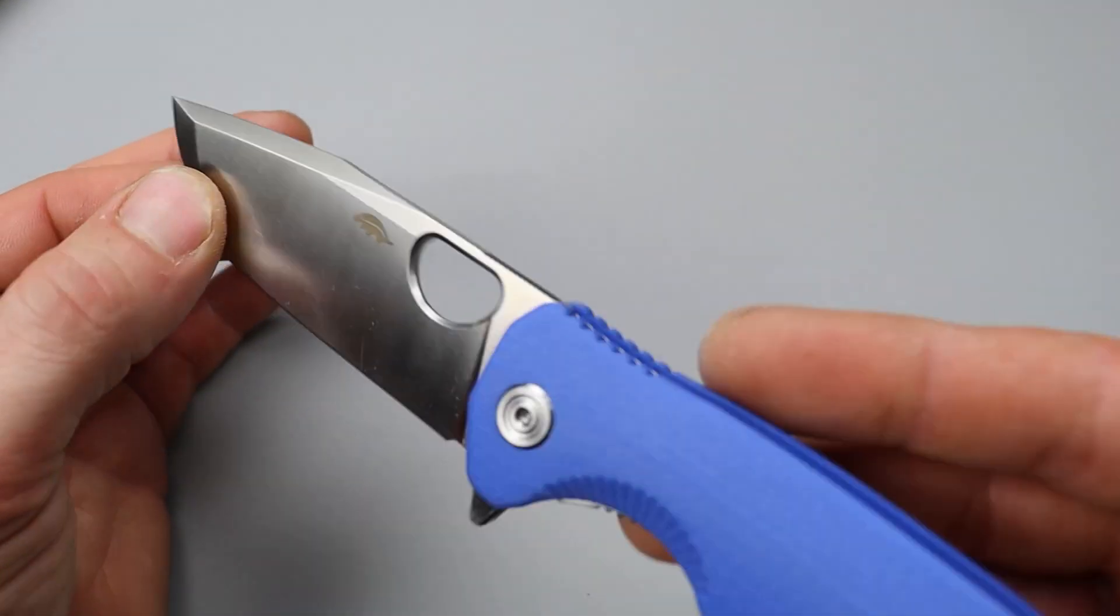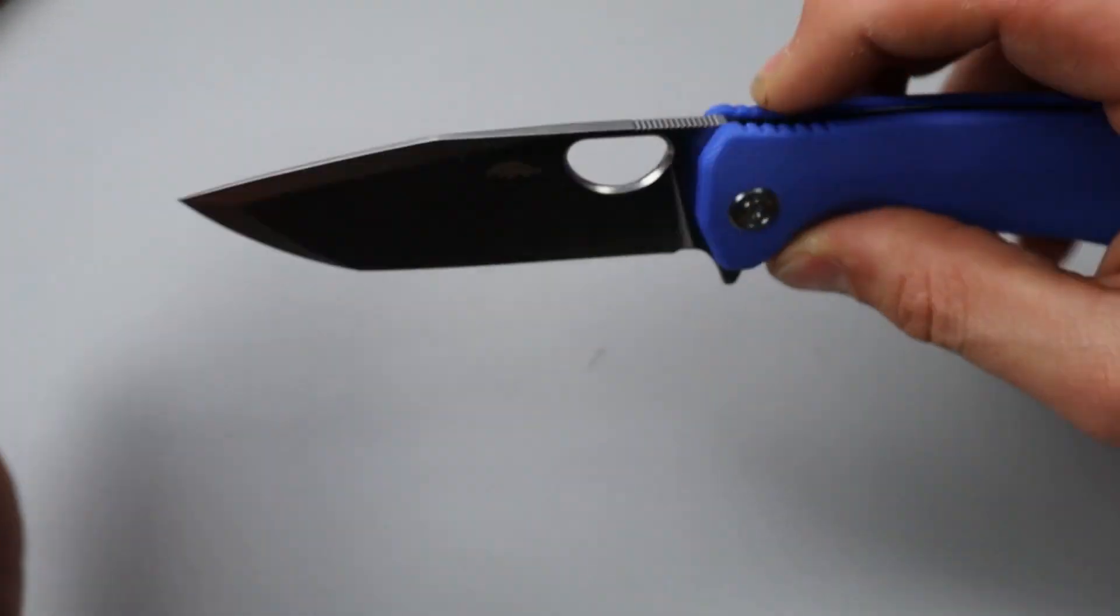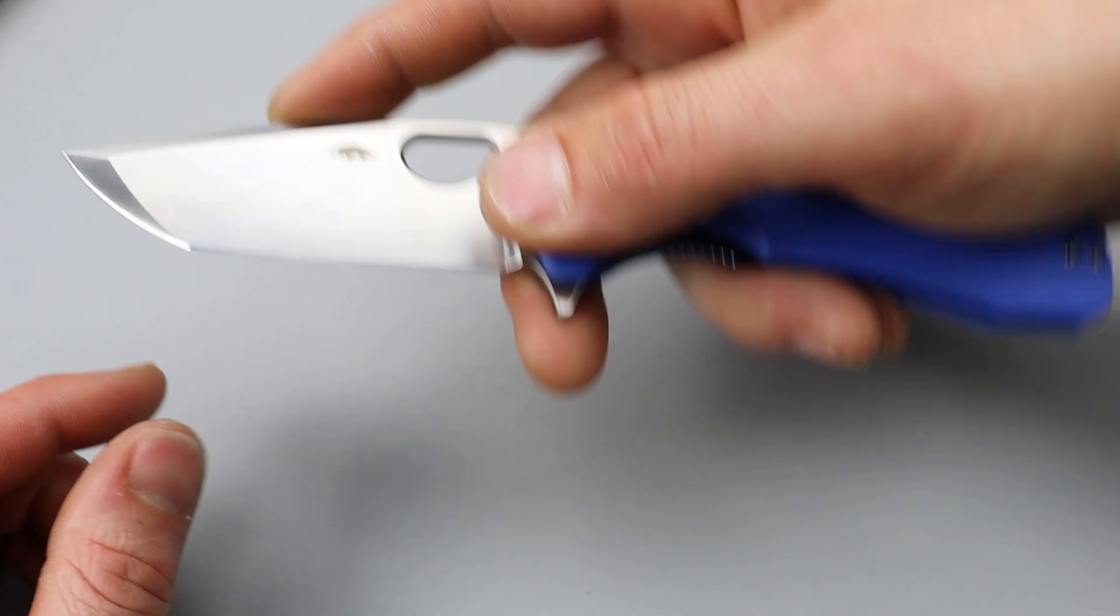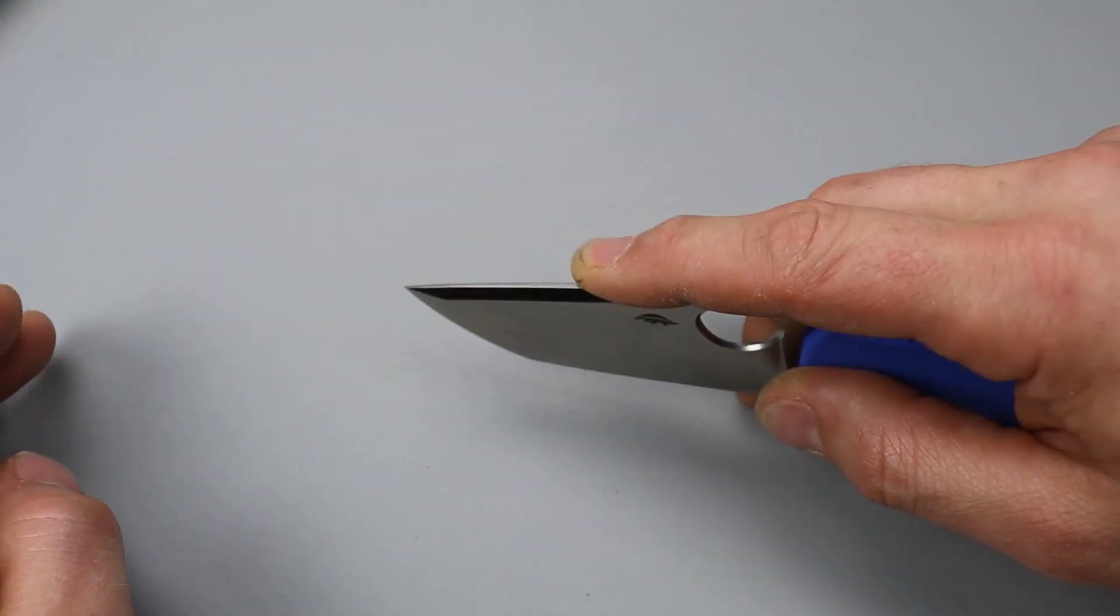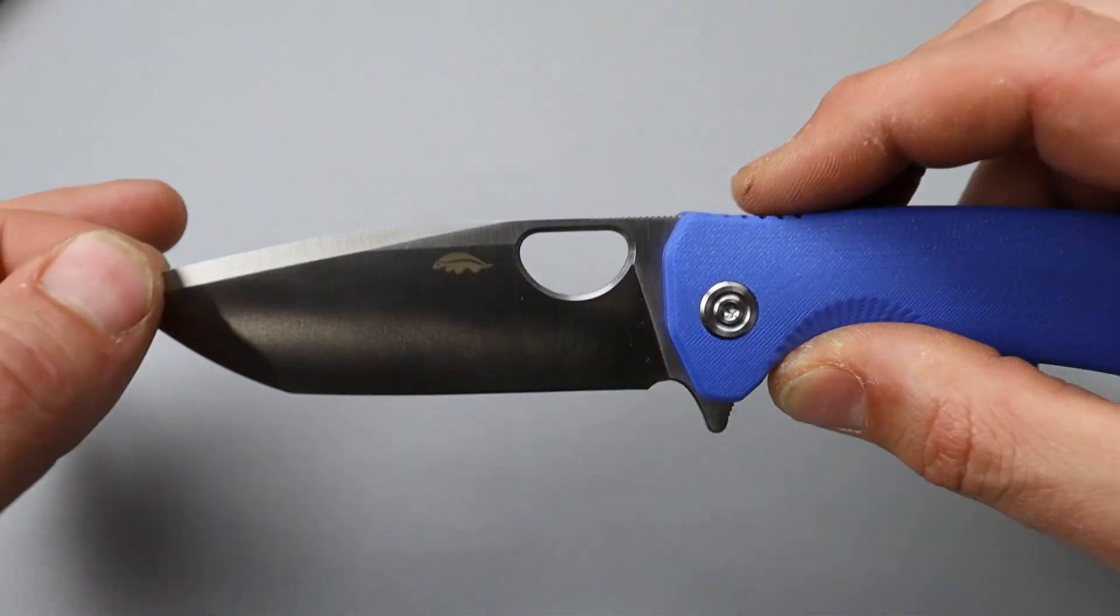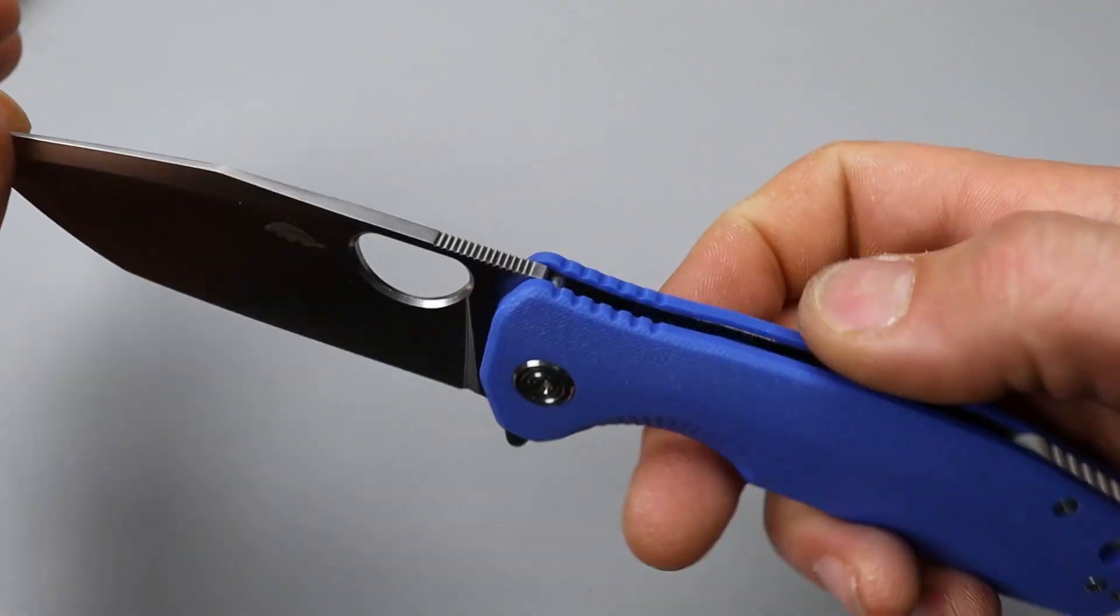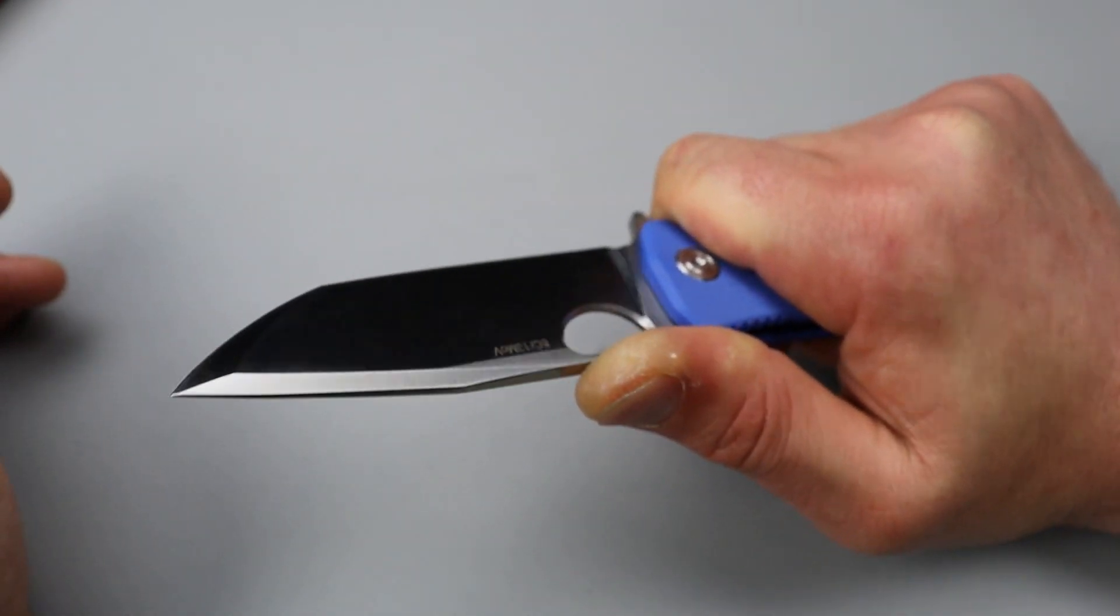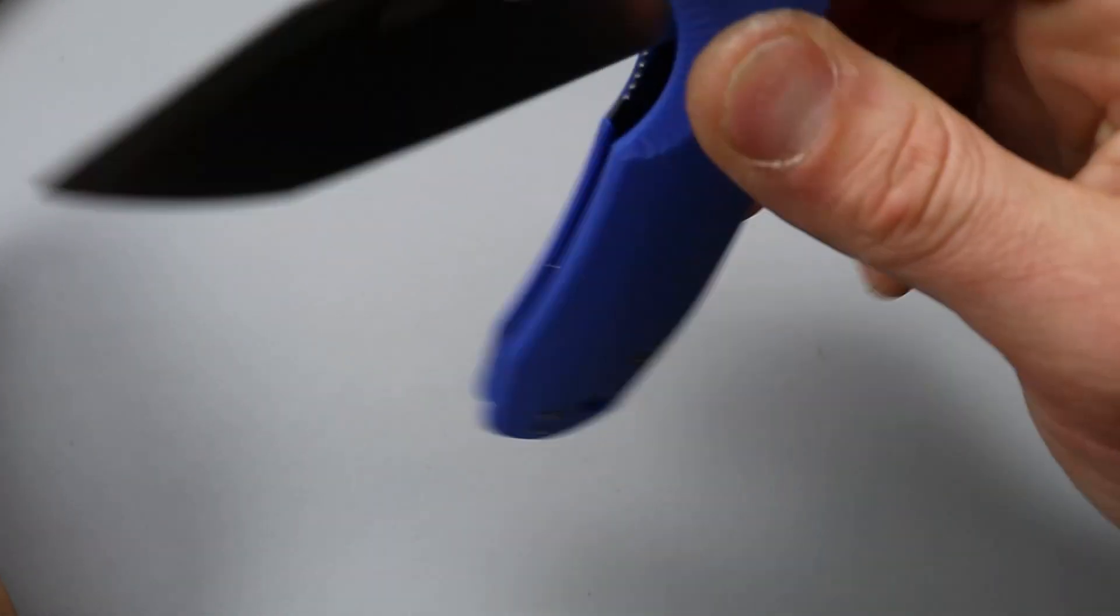But, yeah. I do also like how the Tonto kind of drops down there. So, if you really want to use the tip. Yeah, you still have to lift up high. But, you do have the secondary tip as well. Nice swedge on top of the spine. Jimping on the scale and on the blade. Give you some more traction. Very cool.